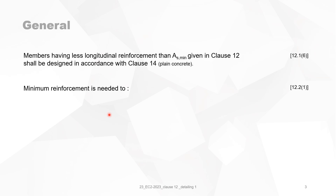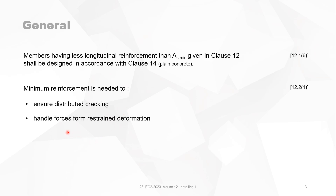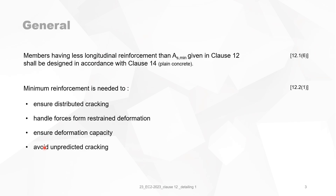Minimum reinforcement for chapter 12 and not in chapter 9. Minimum reinforcement is needed to ensure distributed cracking, to handle forces from restrained deformation — which is a little bit strange because chapter 9 is about restraint deformation, not chapter 12. Minimum reinforcement is also needed to ensure deformation capacity, avoid unpredicted cracking which is brittle failure, and to ensure constructability.